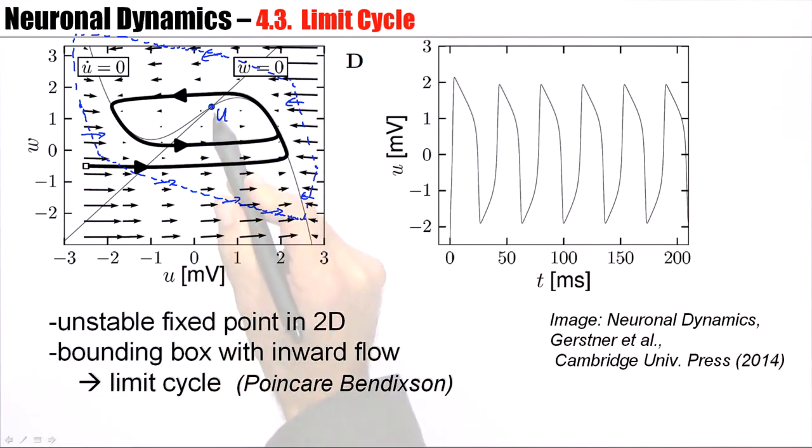So, I know that the fixed point is unstable. So, any trajectory starting in the neighborhood of the fixed point will leave the fixed point, will go away from the fixed point.